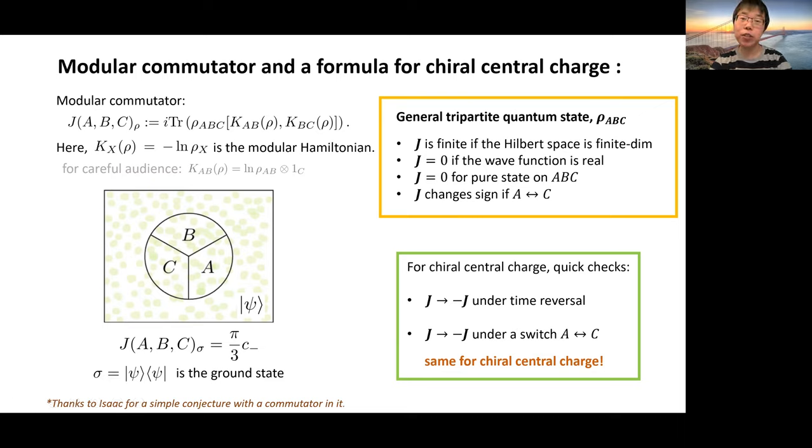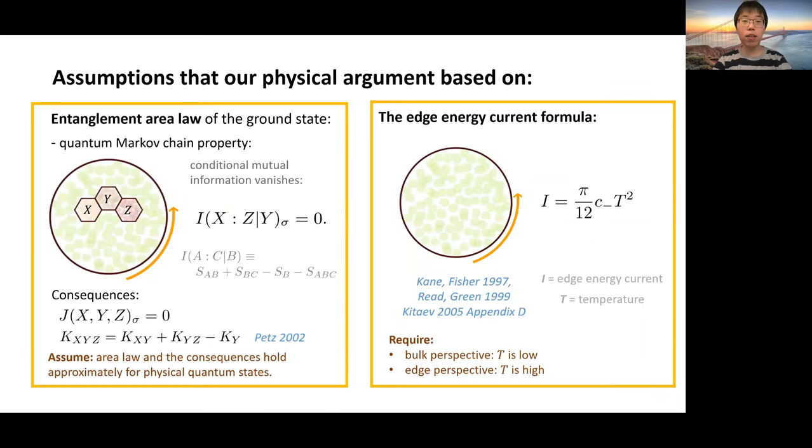Other than the general properties I mentioned that we can easily derive for general tripartite quantum states, for this particular many-body problem, why do we propose this formula? I'm going to give you a physical derivation of this formula in the next few pages, but now, before that time, let's check something simpler. We can check that this quantity J(A,B,C) has the right transformation. What should we expect for the chiral central charge, either under time reversal, ρ to ρ*, or the space reflection which switches A and C.